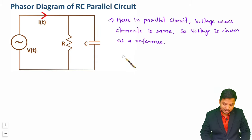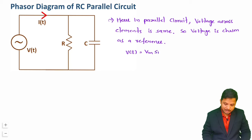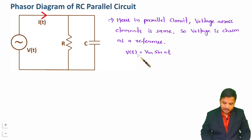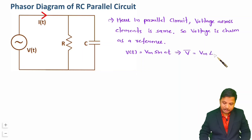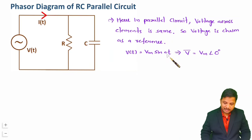Let us consider V(t) = Vm sin(ωt). This is a time-domain function and we can represent it in phasor form as V̄ = Vm∠0°. The phase angle is 0 since it is the reference — notice I have written sin(ωt) only.